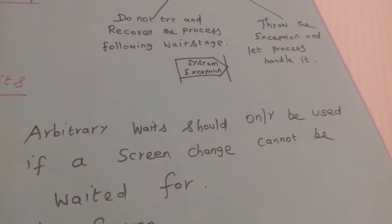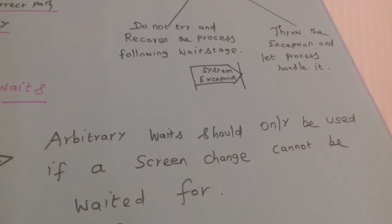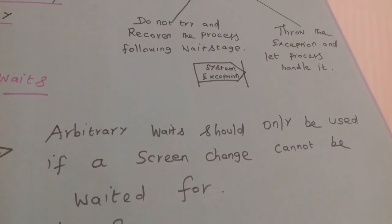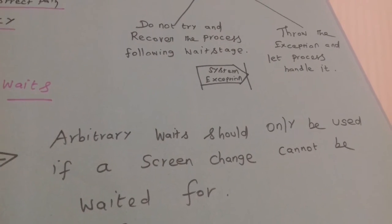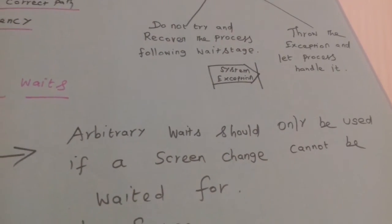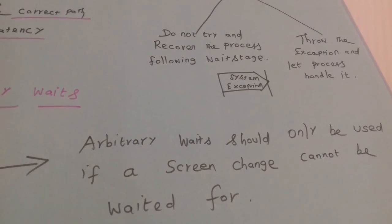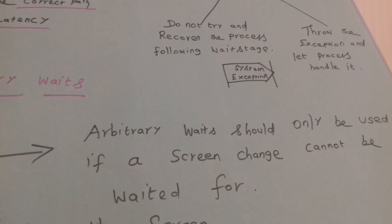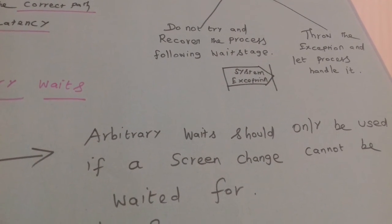Arbitrary wait should only be used if your screen change can happen. Then only you have to wait for arbitrary wait. Unless and until there's no screen change, you don't need to go with arbitrary waits.